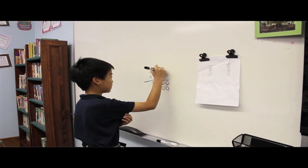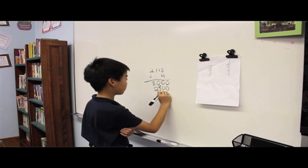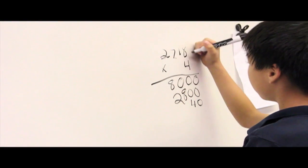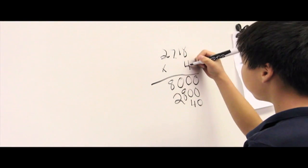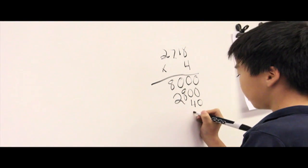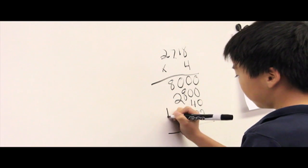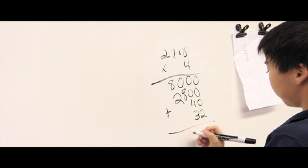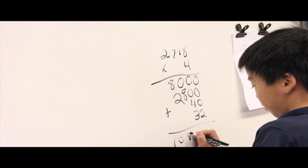After that you do 4 times the tens digit, which is 1 and you will get the product of 40. Then you do 4 times the ones digit, which is 8 and you will get the product of 32. If you add up all the products you will get 10,872.